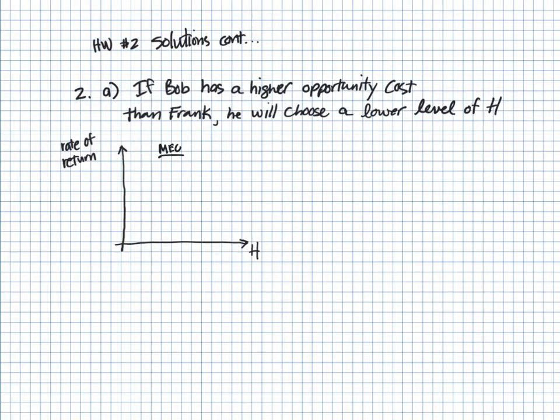Now let's look at number two, part A. So if Bob and Frank are the same in every way, they now have the same MEC curve. So now we don't have a separate MEC curve for Bob and Frank. What is different, though, is the opportunity cost.